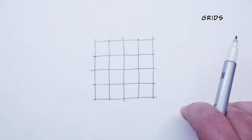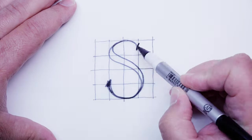Grids can be used as controlling lines to structure the S shape.